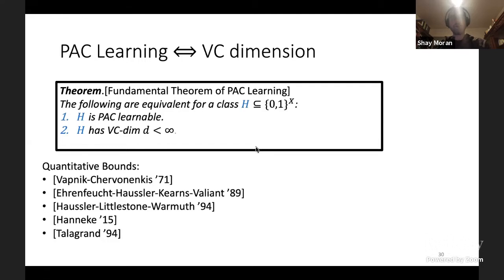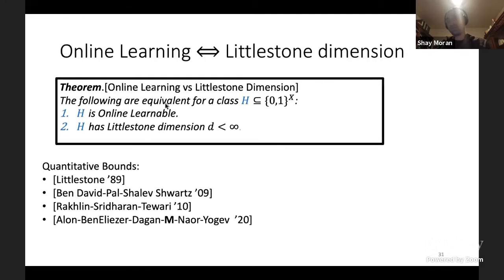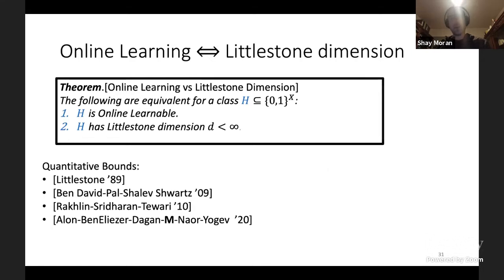The VC dimension characterizes PAC learnability: class H is learnable if and only if it has finite VC dimension d, and the VC dimension captures sample complexity up to log factors. For the Littlestone dimension we have the same result for online learning: H is online learnable if and only if it has finite Littlestone dimension, with the same kind of characterization of regret bounds.